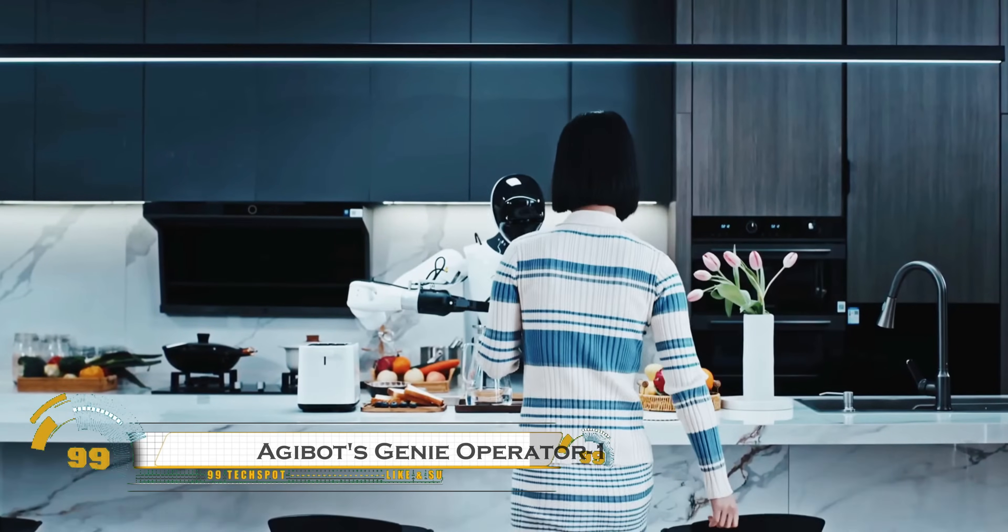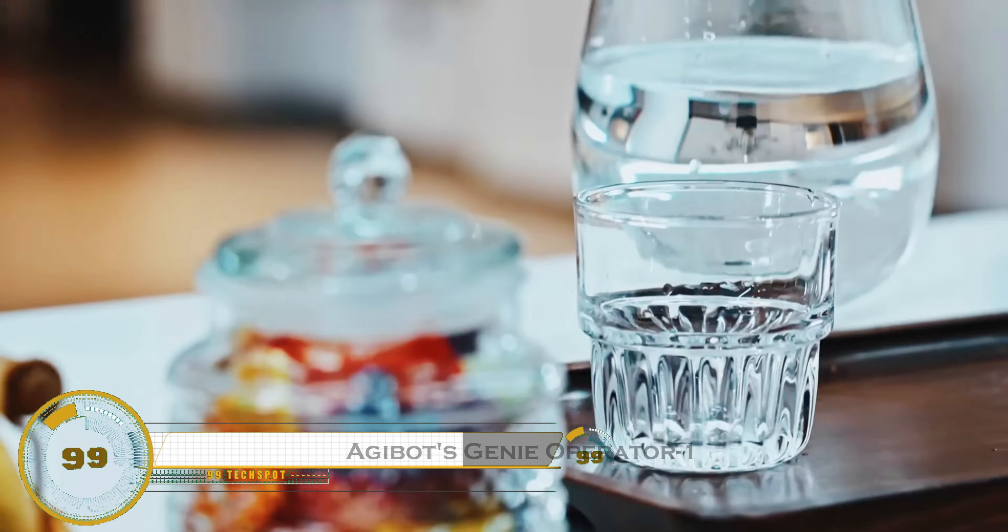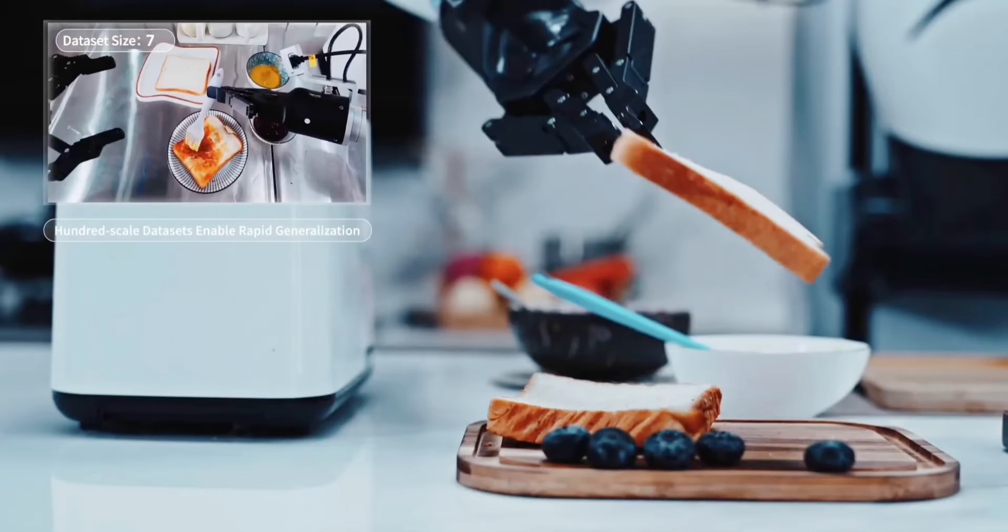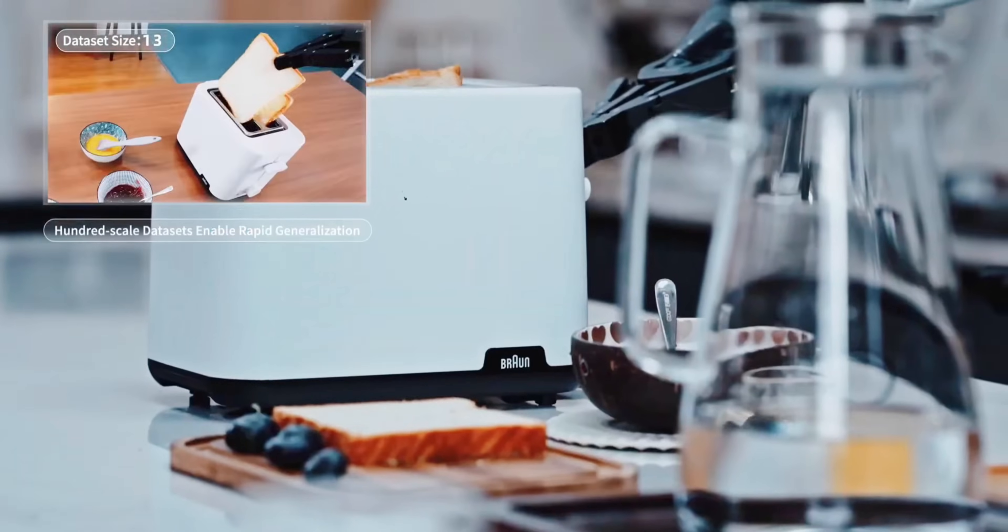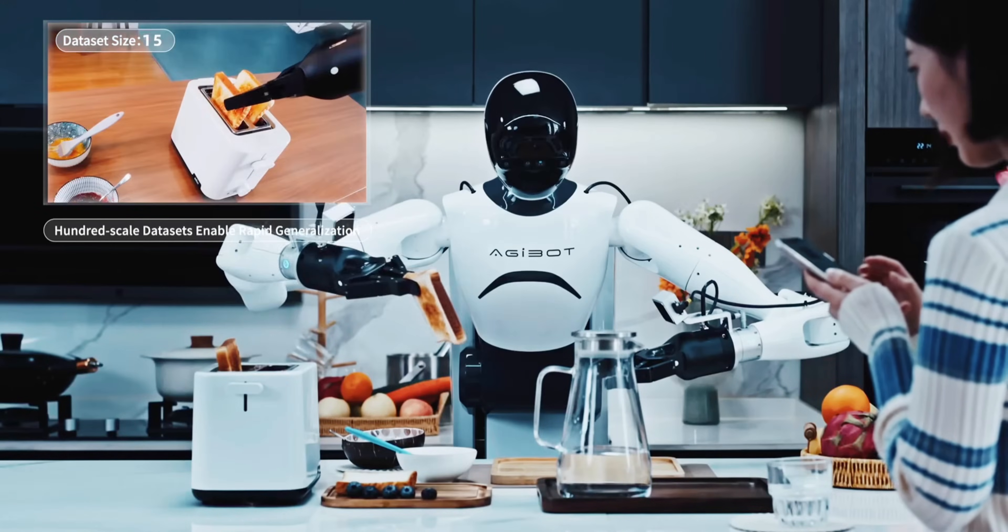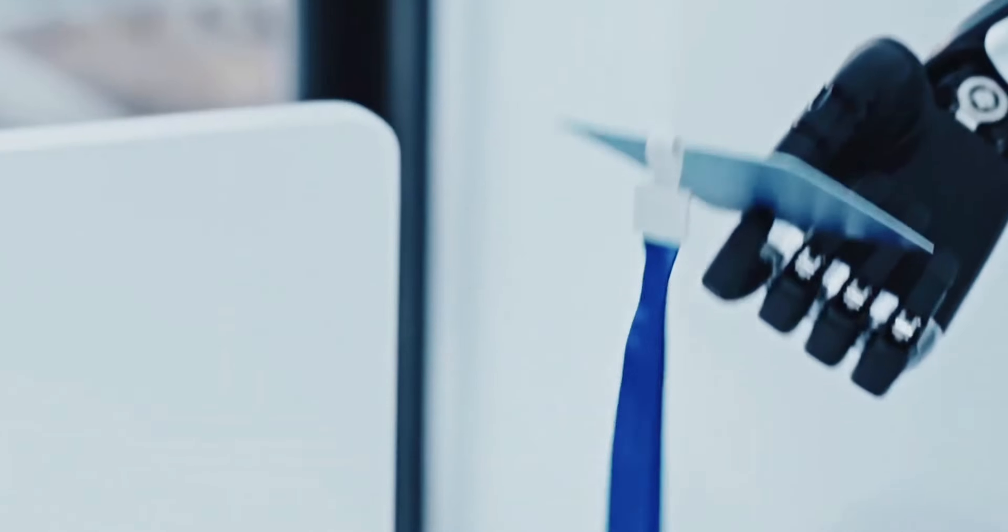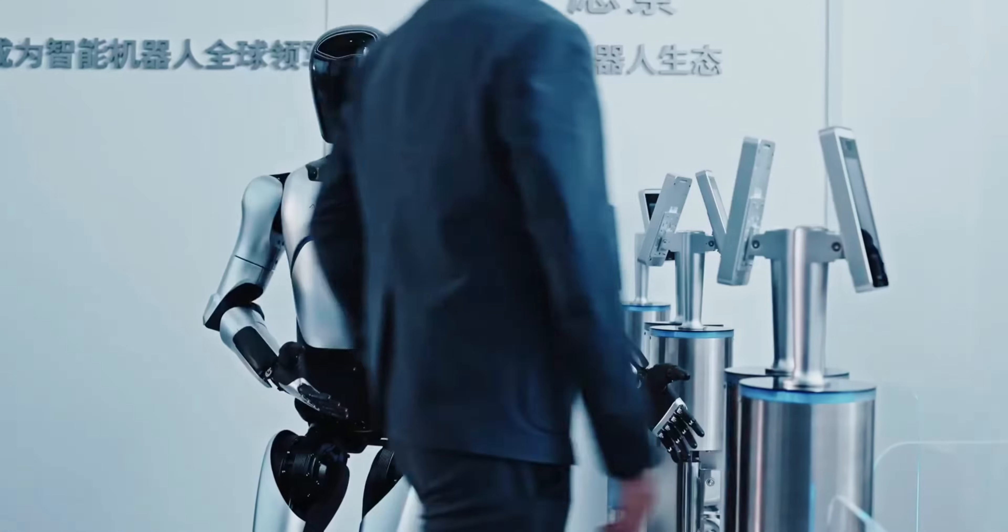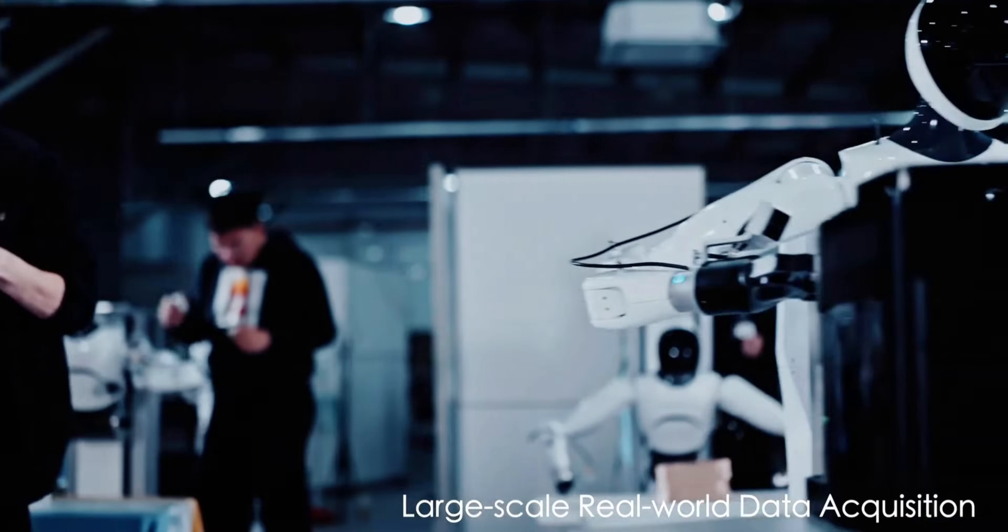The Agabot Genie Operator One is a cutting-edge robotic assistant designed to revolutionize industrial automation and remote operations. This advanced humanoid robot is equipped with AI-driven precision, dexterous manipulators, and real-time decision-making capabilities, making it ideal for handling complex tasks in construction, logistics, and hazardous environments.